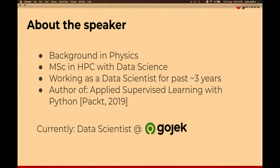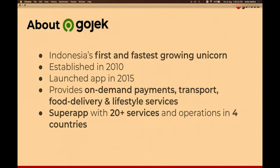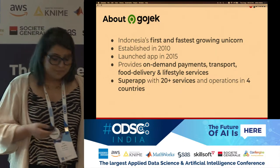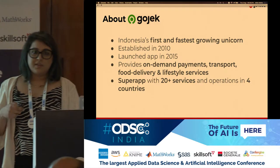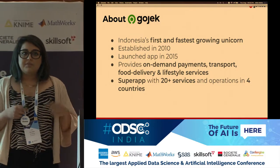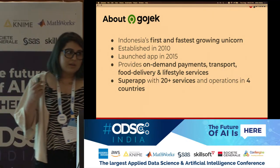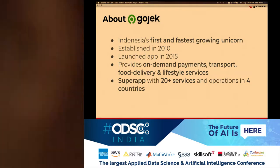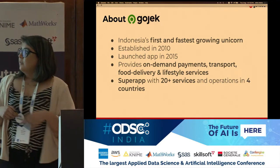Just a show of hands — how many of you have heard of Gojek? For those who haven't, Gojek is Indonesia's first and fastest growing unicorn, and it has grown 1100% in just the last three years. With over 20 plus services within the app and products across five countries, we are what we call a super app. One of our services is called GoFood, which is the food delivery platform within the app, and it has over 400,000 restaurants and 16 million dishes on the platform.